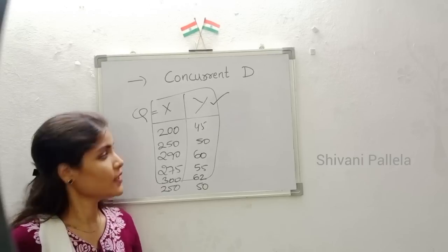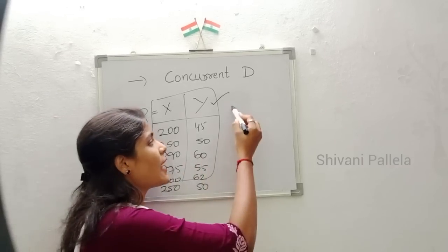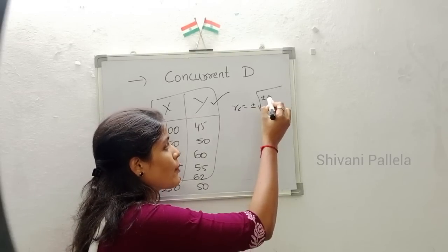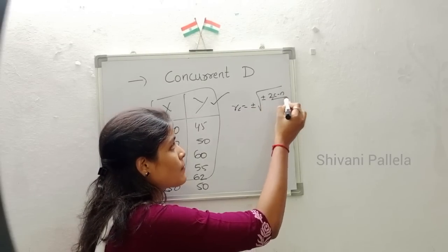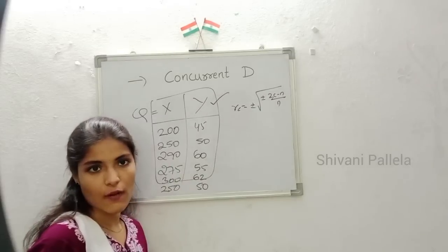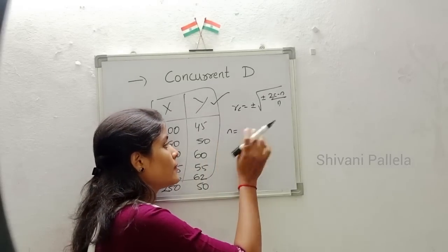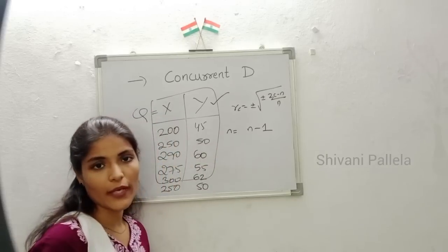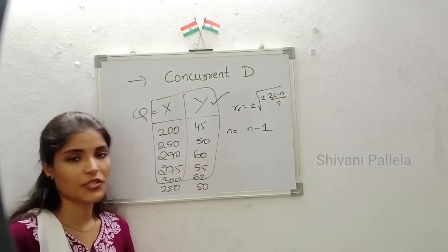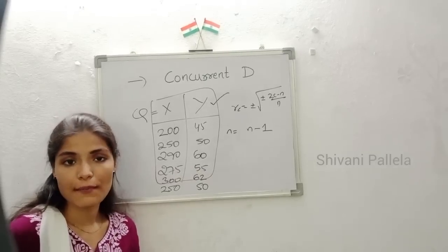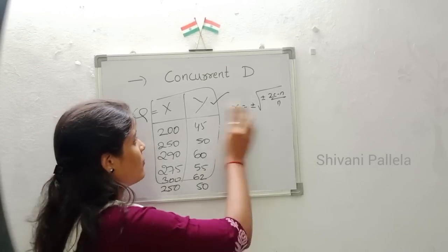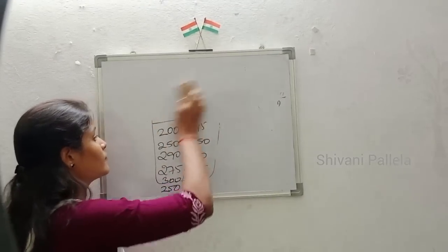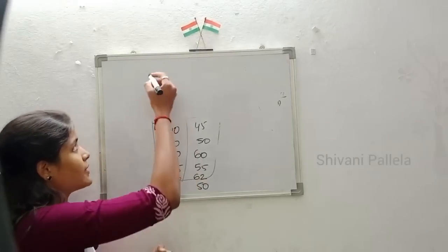The formula is: rc = ±√(±(2c − n) / n), where n = number of observations minus 1. Now we will write the solution. Here I am writing the solution with X values: 200, 250, 290, 275, 300 and Y values: 45, 50.